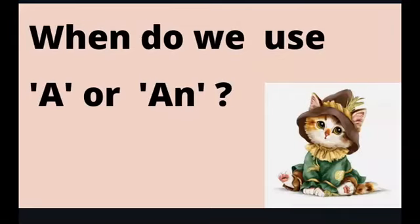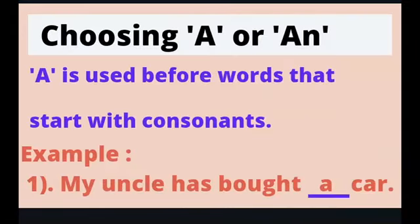Now, when do we use 'a' or 'an'? We have learned that 'a' and 'an' are indefinite articles used to refer to non-specific singular nouns. But how do we know when to use 'a' and when to use 'an'? 'A' is used before words that start with consonants. Example: My uncle has bought a car. The noun 'car' begins with a consonant 'c', so we use the indefinite article 'a'.